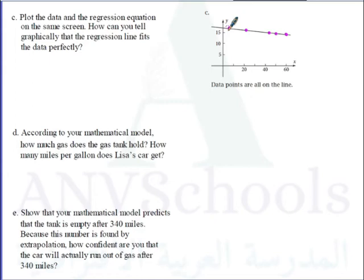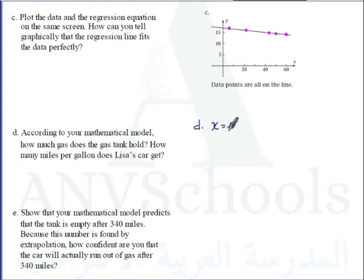Letter D: According to your mathematical model, how much gas does the gas tank hold, and how many miles per gallon does Lisa's car get? Since the question asks about initial gas capacity, we get the value of y-hat when x equals 0 — meaning the car is not moving.